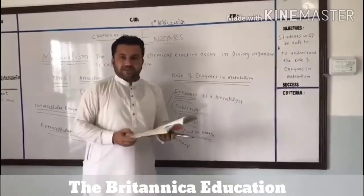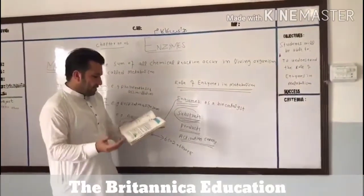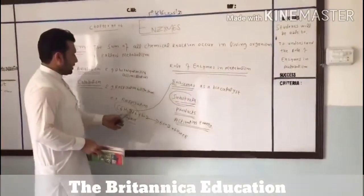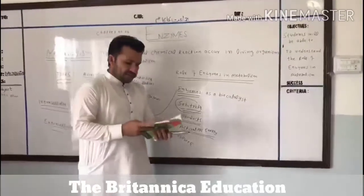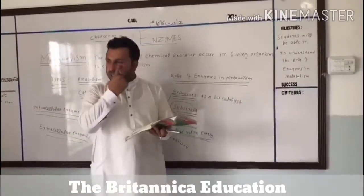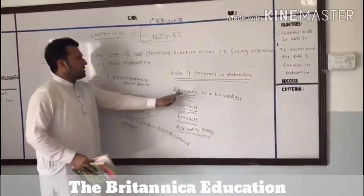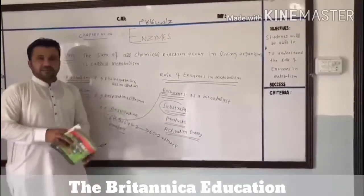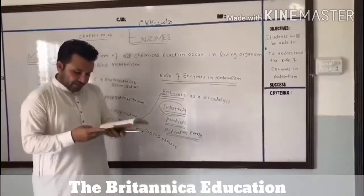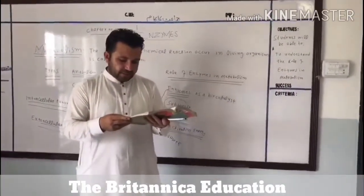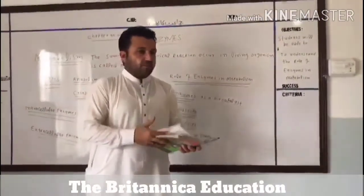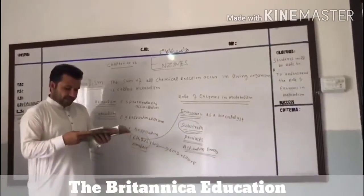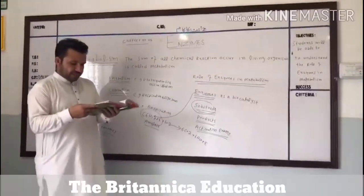Enzymes lower activation energy in several ways. Number one: they alter the shape of the substrate and reduce the energy required for this change. Some enzymes do so by disrupting the charge distribution in the substrate. The enzyme also lowers activation energy by bringing the substrate into the correct orientation.